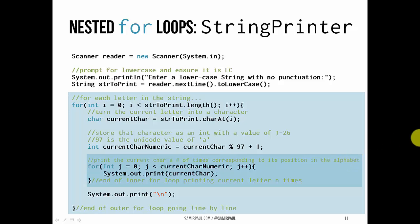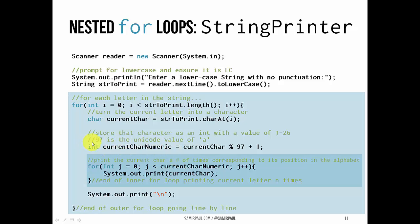We take that current character and mod it by 97. Why 97? Because every character maps to a numerical value, and 97 happens to be the value that maps to lowercase 'a'. So if we mod the current character by 97, we get 0 for 'a', 1 for 'b', 2 for 'c', and so on. If we want to number them from 1 to 26 instead of 0 to 25, we add 1 and store that in an int variable called currentCharNumeric. Then we nest another for loop, starting j at 0 while j is less than currentCharNumeric, and print that character. So a prints 1 time, b prints 2 times, c prints 3 times, and z prints 26 times. In between each letter, it prints a new line.